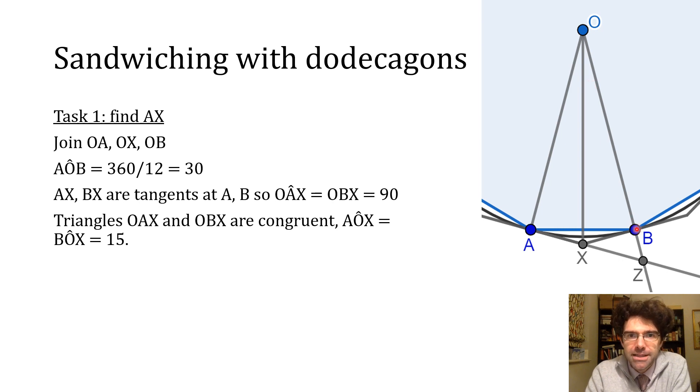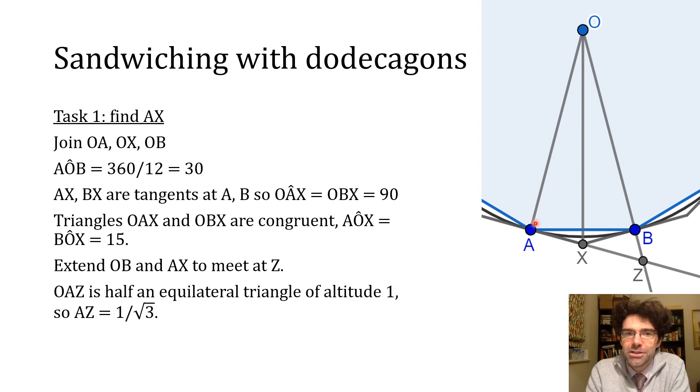Now so far it's very similar to what we did with the hexagon, but what we do next is different. I've extended OB and AX to meet at Z, and the reason that I've done that is actually that we know something about OAZ already. If you look at the angles we've got 30 degrees at O and a right angle at A, so we have 60 degrees left over at Z, so it's another instance of this half an equilateral triangle, and again we've got the height being one just like we had before. So we can actually just simply remember that AZ is one over root three, and this process of using a triangle that we learned about in the last step to help us out in the next step is something that would carry on when you keep doubling the number of sides in the polygons that you're working with.